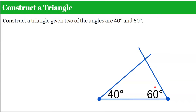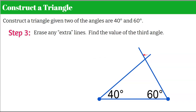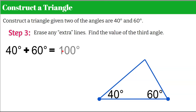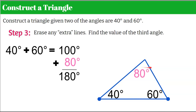This is what my construction looks like when I remove the protractor, and step three is to erase any extra lines so I have a perfect triangle. Now we need to find the value of that third angle. We could use our protractor to measure it, but there's room for error. Another way is to use our theorem: 40 plus 60 equals 100 degrees. We know that 100 plus that unknown angle must have a sum of 180 degrees. What added to 100 is 180? That's easy — 80 degrees. So the third angle has to be 80 degrees.